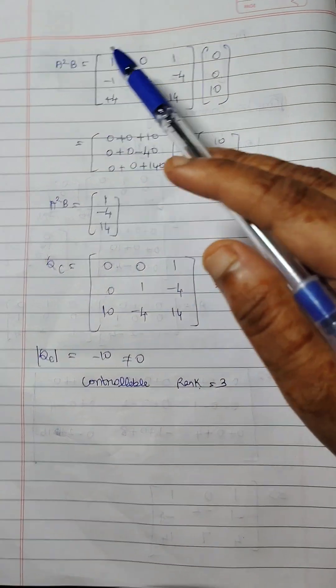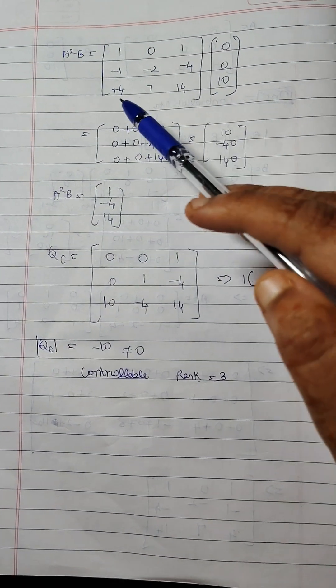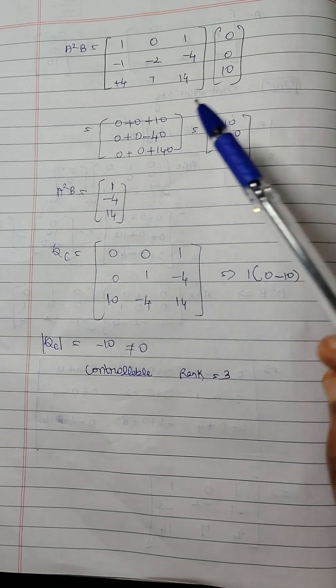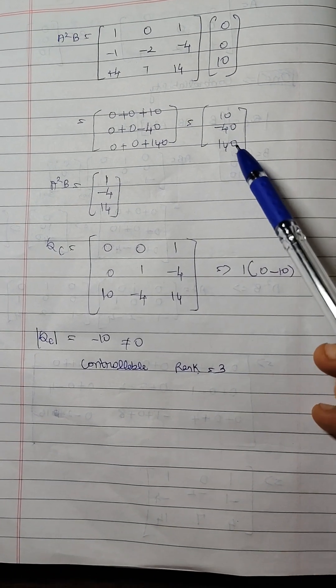To find the A square B should be 1, 0, 1, minus 1, minus 2, minus 4, 4, 7, 14 into 0, 0 and 10. While we are multiplying this we get the value as 10, minus 40 and 140.